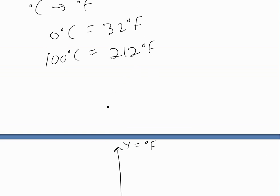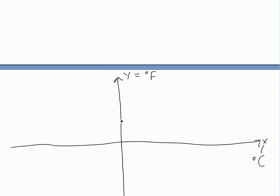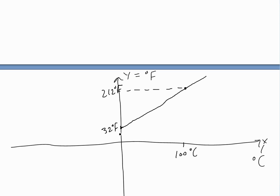So at x = 0 (0 degrees Celsius), we get 32 degrees Fahrenheit — we get the point (0, 32). And at x = 100 (100 degrees Celsius), we get 212. So we've got two points, and we draw a line across them. We can write y as T_Fahrenheit, which is a function of temperature in Celsius — that's what x is — so we just need to find this equation.